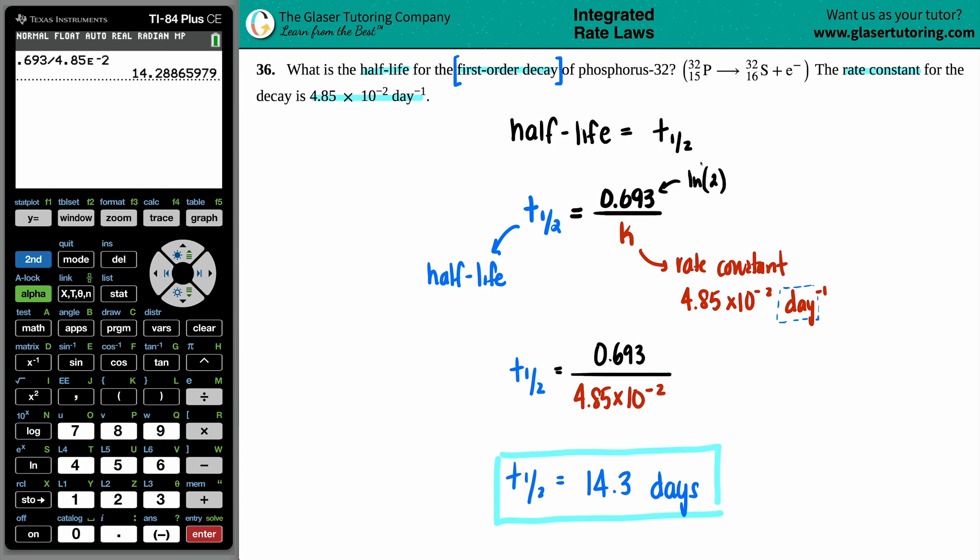So in perspective, if you had 100% of this phosphorus, it will take nearly two weeks, 14 days to break down into sulfur. You'll have 50% of the sulfur and 50% of the phosphorus. And then it will break down another 50% from the 50%, so that's 25% in another 14 days. But that's basically what half-lives are. You just keep on breaking it in half, breaking it in half, breaking it in half. And the time is the same amount of time.